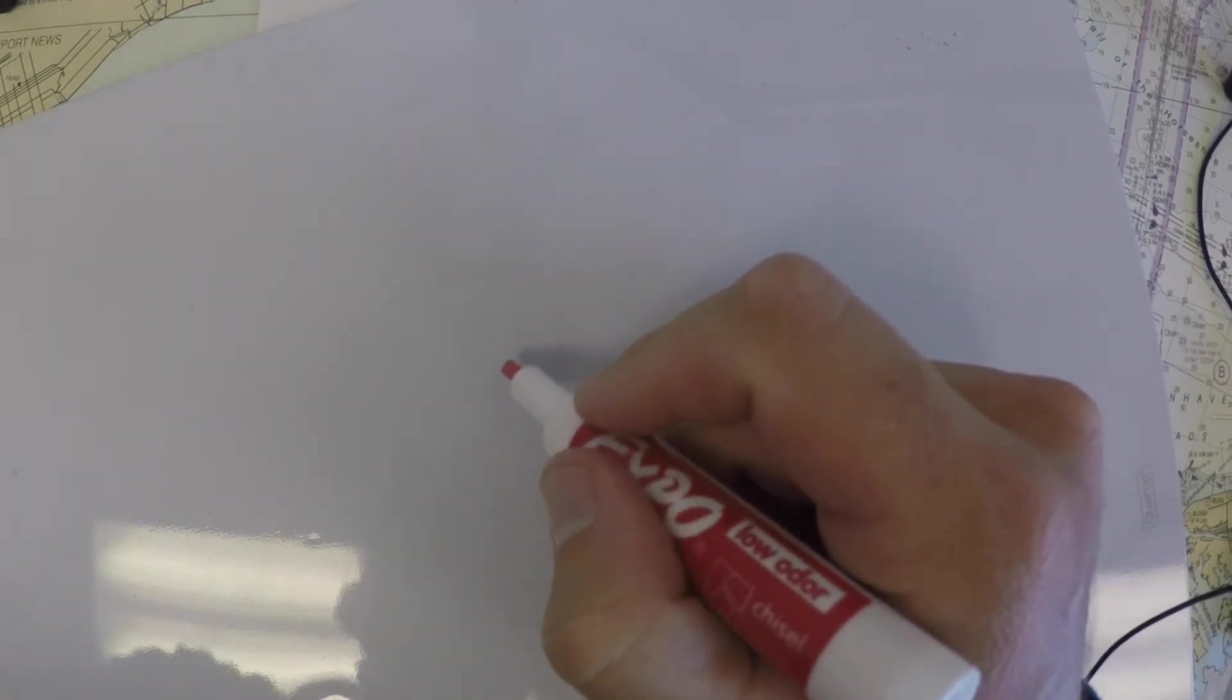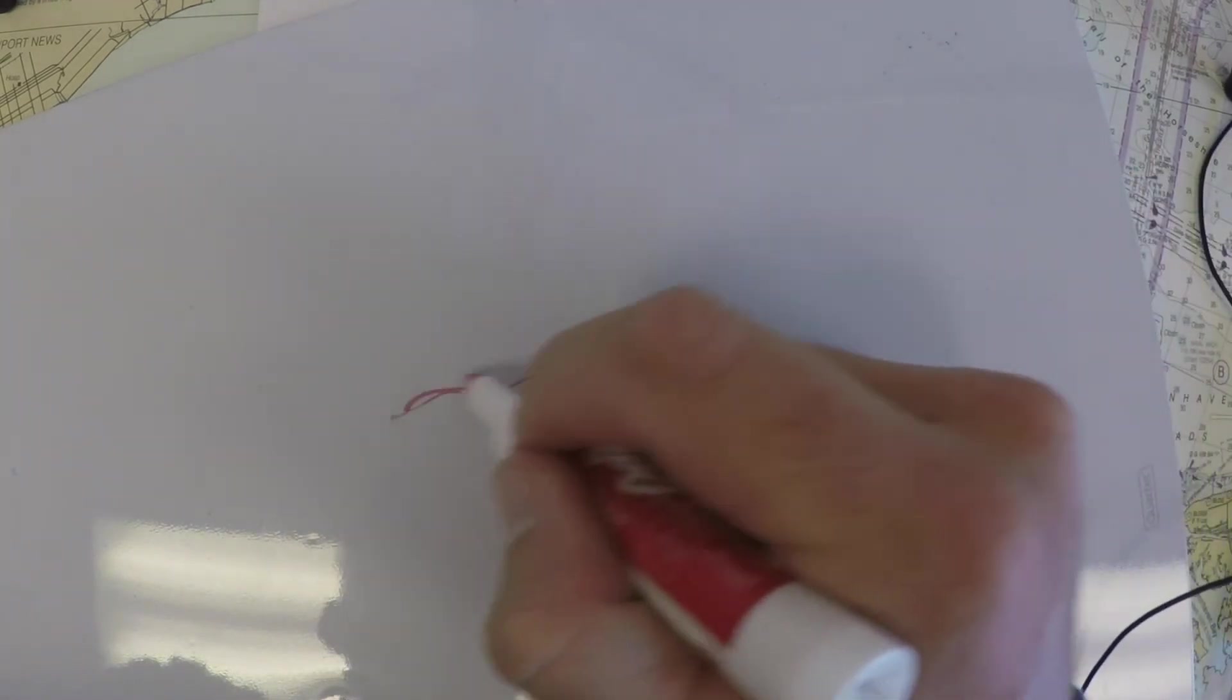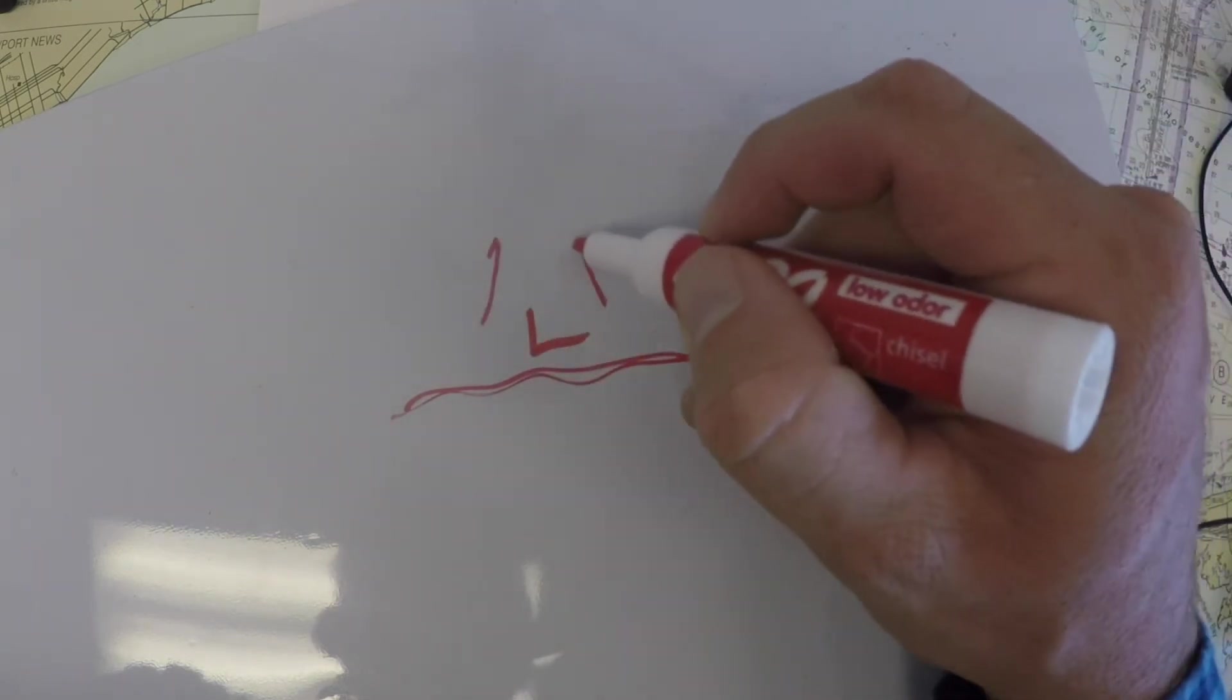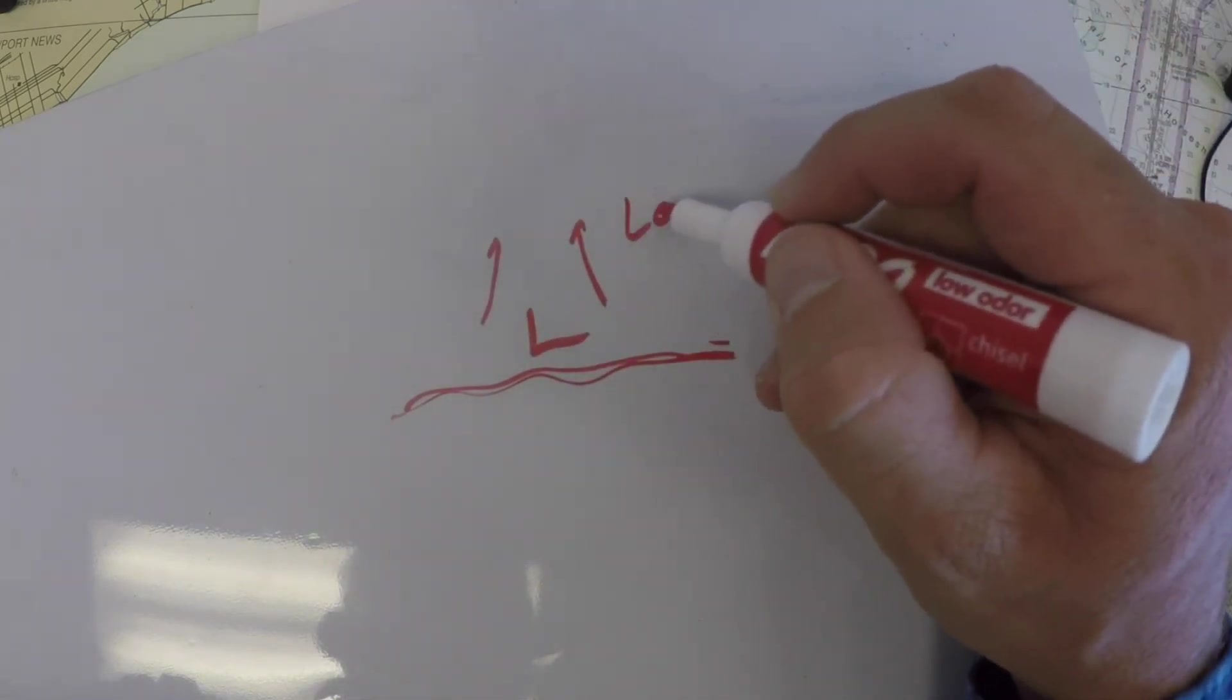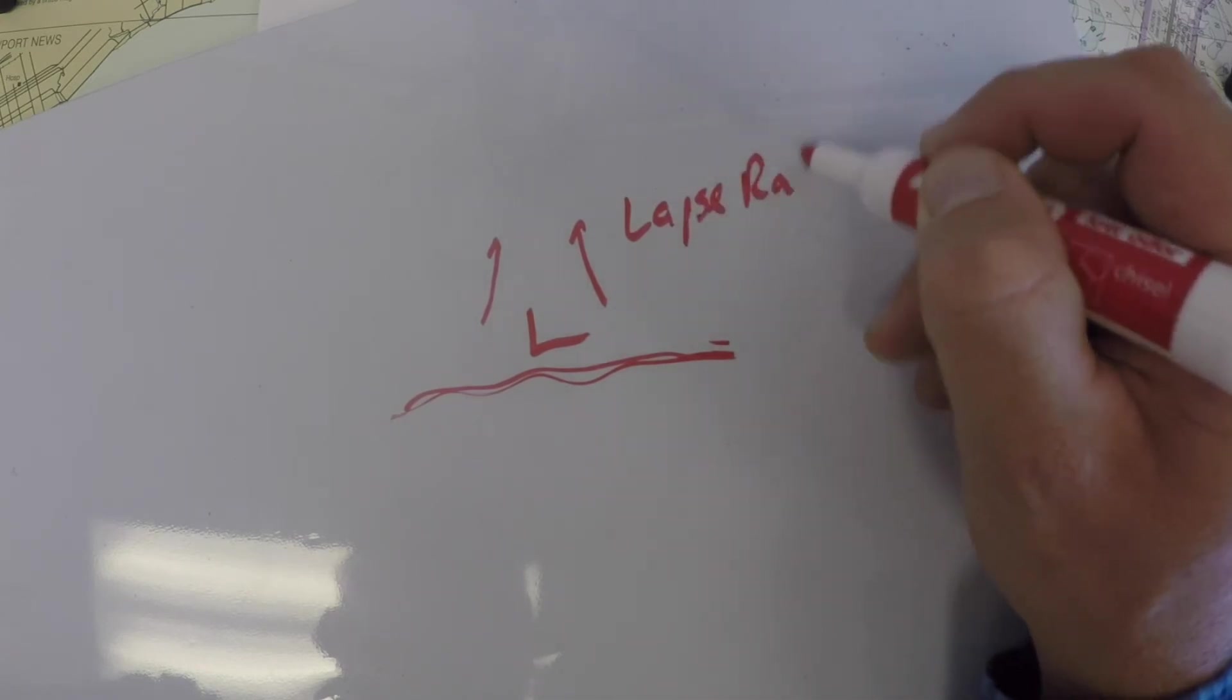And it has to do with kind of how air rises. So if the sun heats up some air on the surface of the ocean or the land, it's going to form a general low pressure, and it's going to cause air to rise. And the lapse rate has to do with rising air.